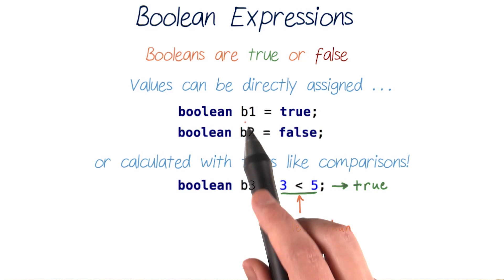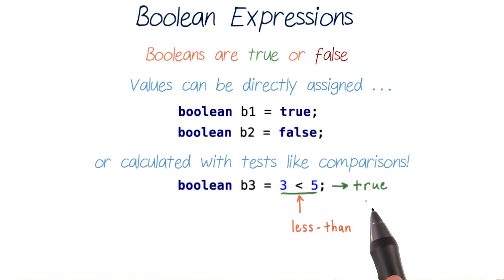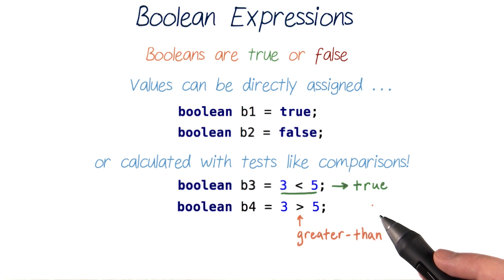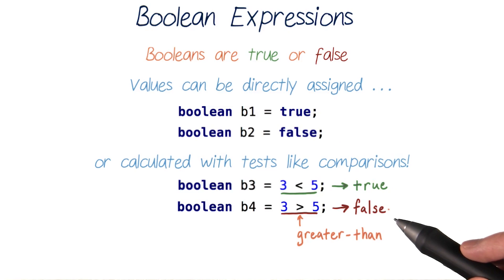So here, b1 and b3 are equal to the same value, true. But b3 is assigned to the value of this comparison and not to true directly. Then if we wrote this expression, which checks if 3 is greater than 5, this would evaluate to the boolean value of false, since 3 is not greater than 5. And then b2 and b4 will have the same value.